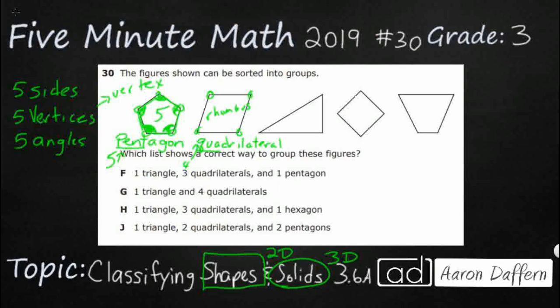This one's fairly easy. Let's check our sides. So that's going to be a three-sided shape. So that's a triangle. And most of us know by now that the prefix tri means three.